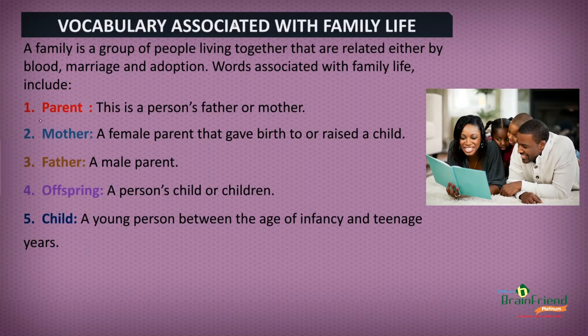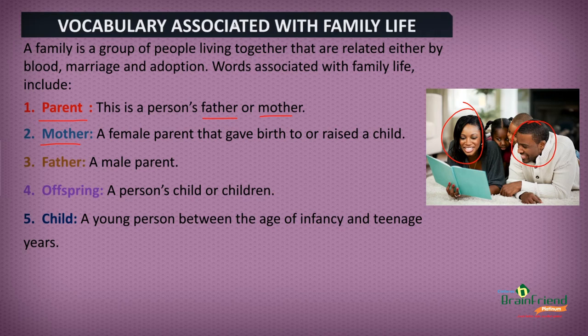First, we have Parent — a person's father or mother, like a mother and a father. Next, we have Mother — a female parent that gave birth to or raised a child. Next, we have Father — a male parent. Also, we have Offspring — a person's child or children, like two children here. Moving on, we have Child — a young person between the age of infancy and teenage years, while more than one child is called Children.